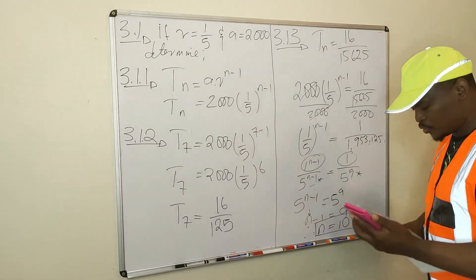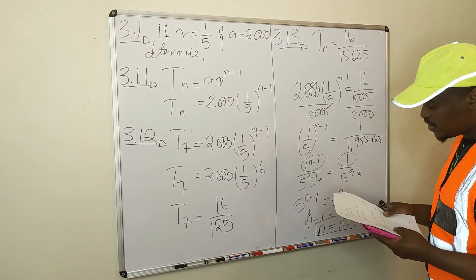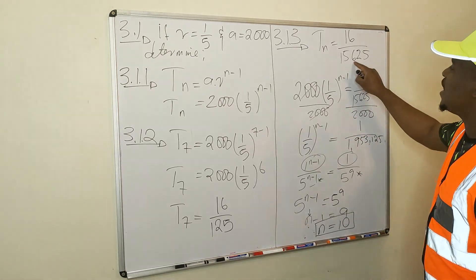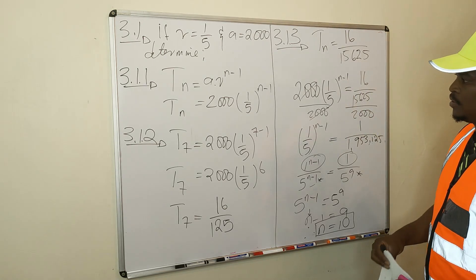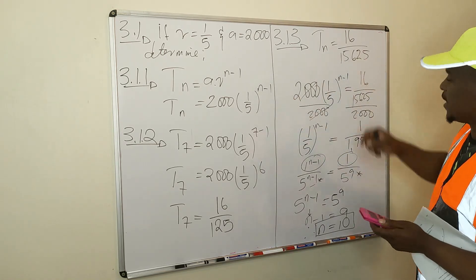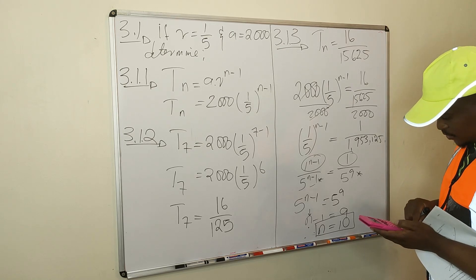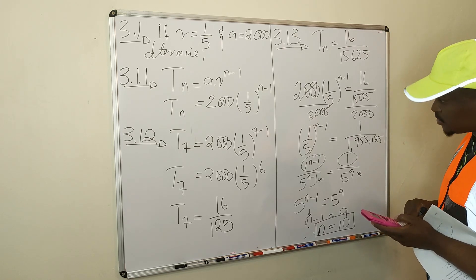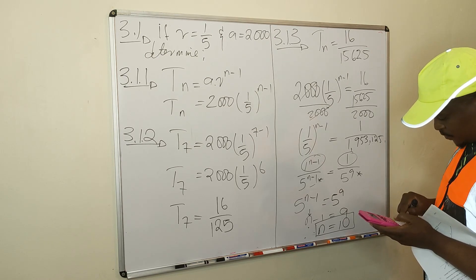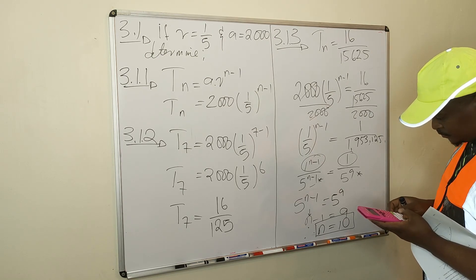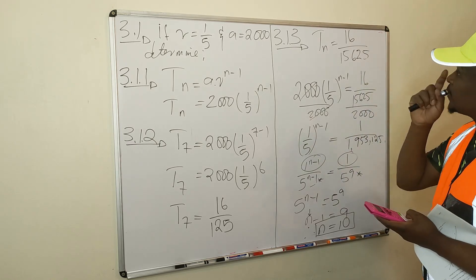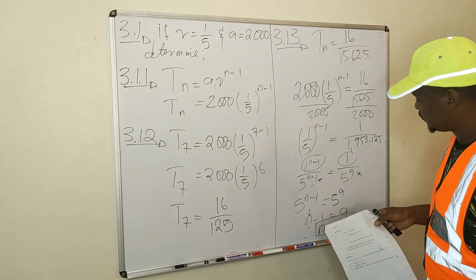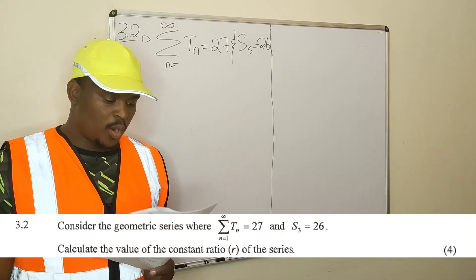So to answer our question — which term of the series will have the value of 16/15,625 — it is the 10th term. If you substitute n = 10: 2000 × (1/5)^(10−1), you get that answer. We're done with 3.1.3 and moving on to 3.2.